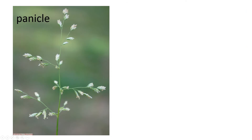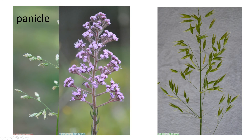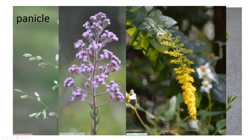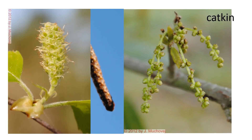A panicle is a compound raceme where the central stalk branches and branches again, and the flowers sit on the ends. A catkin is like a spike that hangs down. The flowers are congested, and these are often found in trees.